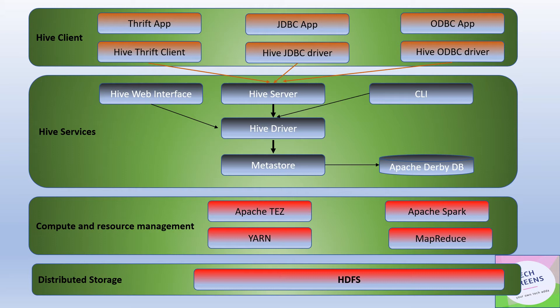The next component is your compute — data processing and resource management. Hive supports three execution engines: Apache Tez, Apache Spark and MapReduce. The resource management used in Hive is YARN. As it is built on top of Hadoop, the underlying distributed storage is primarily HDFS, though it can also work on top of Apache HBase. Primarily, Hive is created for the Hadoop ecosystem — a SQL and Hadoop solution.